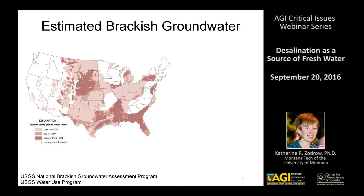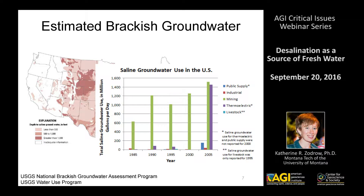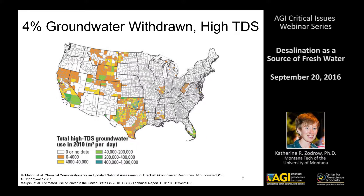Most of the United States — especially the Rocky Mountains, Texas, the South, the Midwest, and parts of the East Coast — has access to brackish groundwater. It's important to note that a lot of brackish groundwater used in the US is not desalinated prior to use; it's used for things like mining or thermoelectric cooling that don't require desalination. Desalinated brackish groundwater for public supply is actually a very small fraction of total brackish groundwater used.